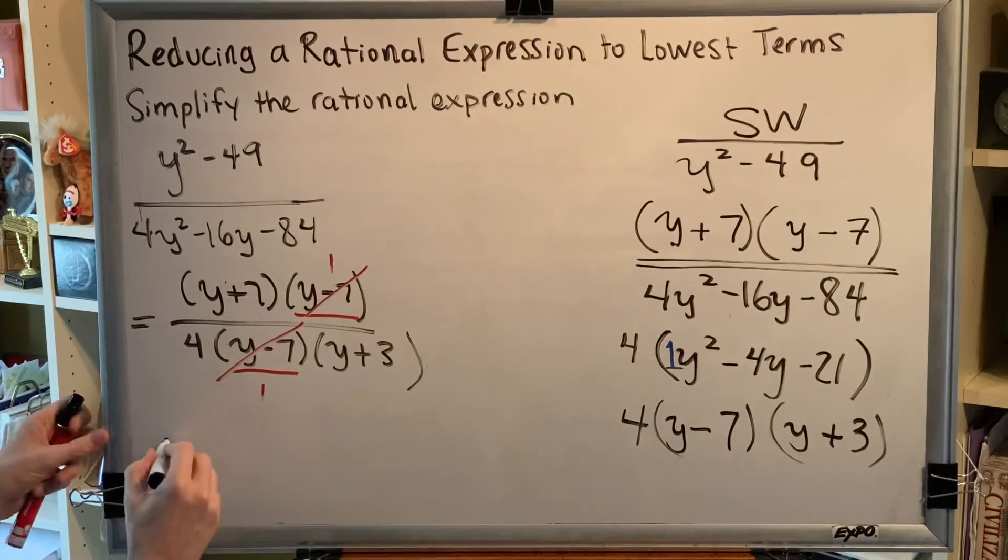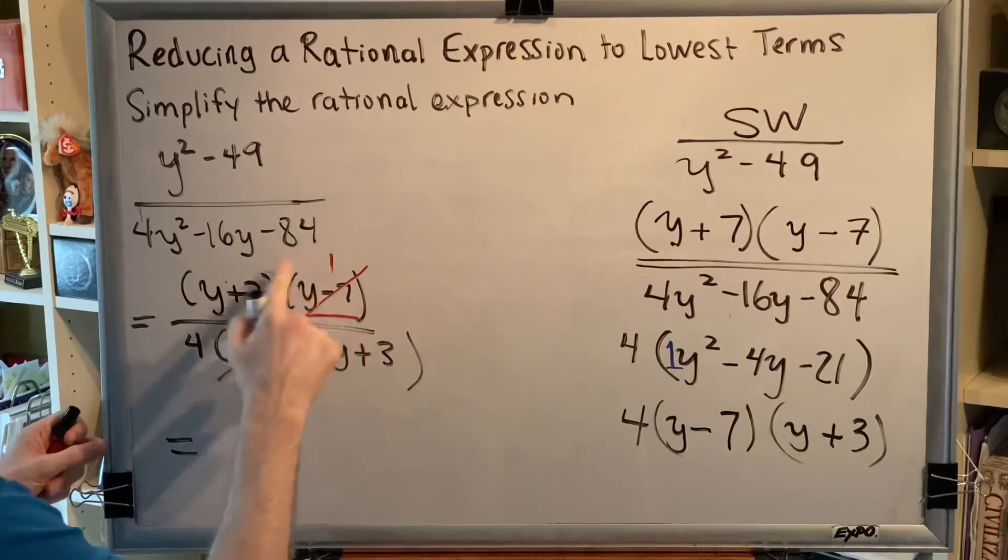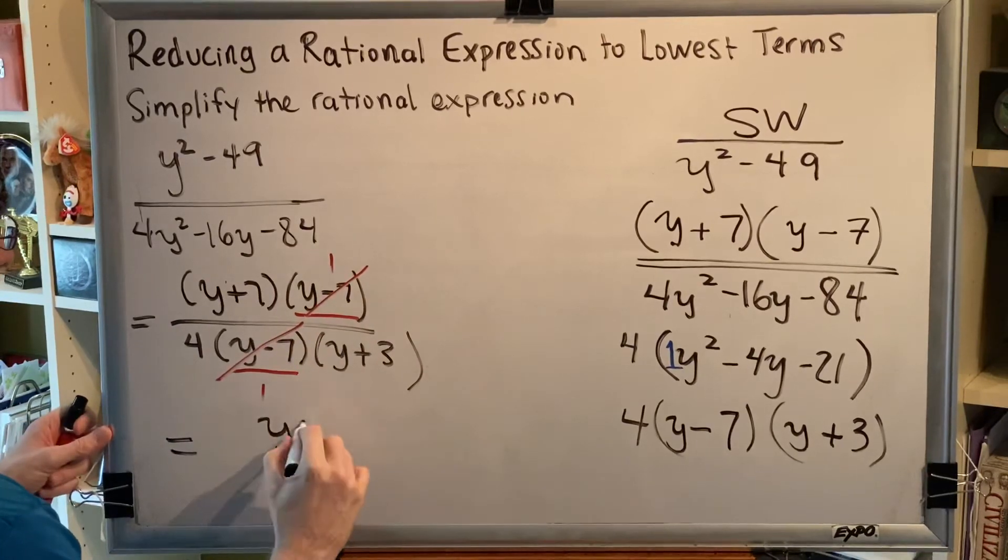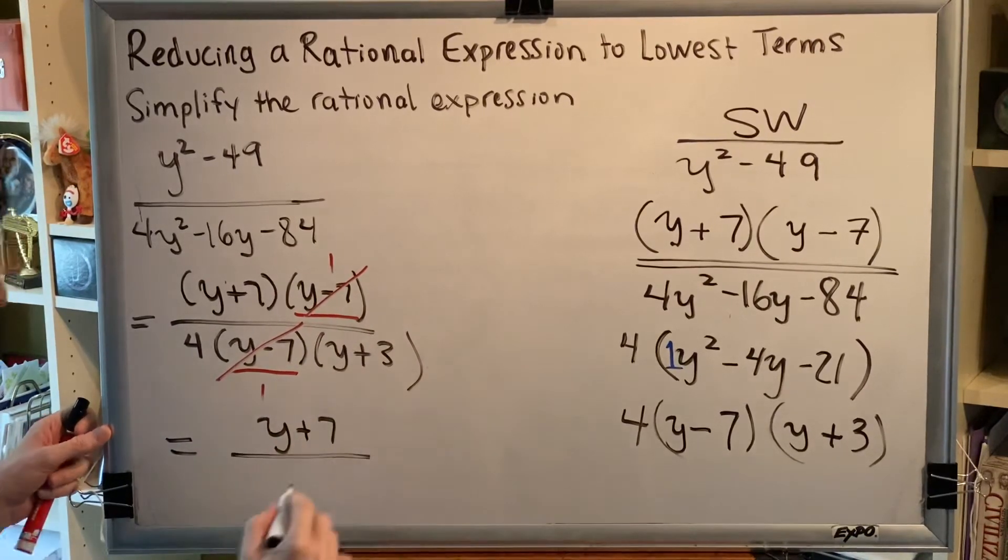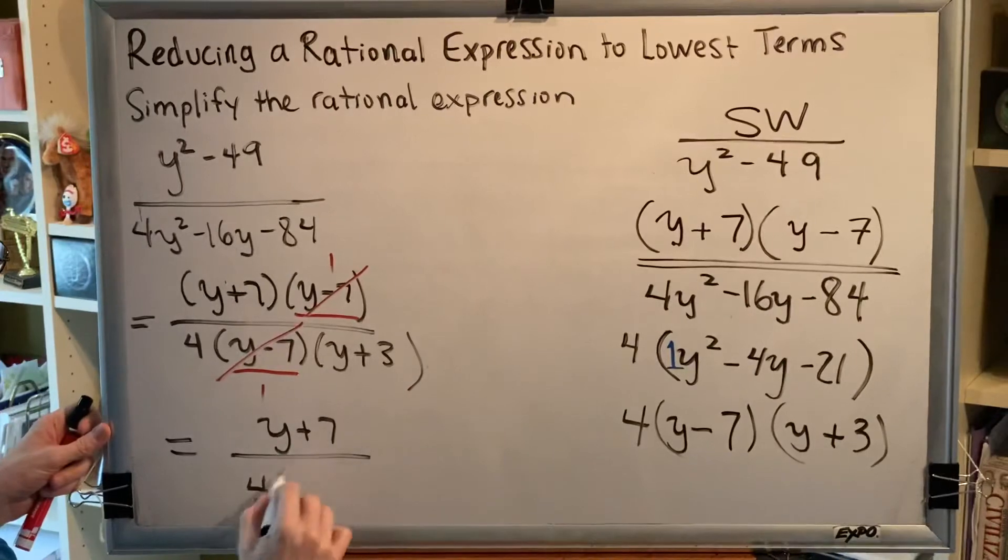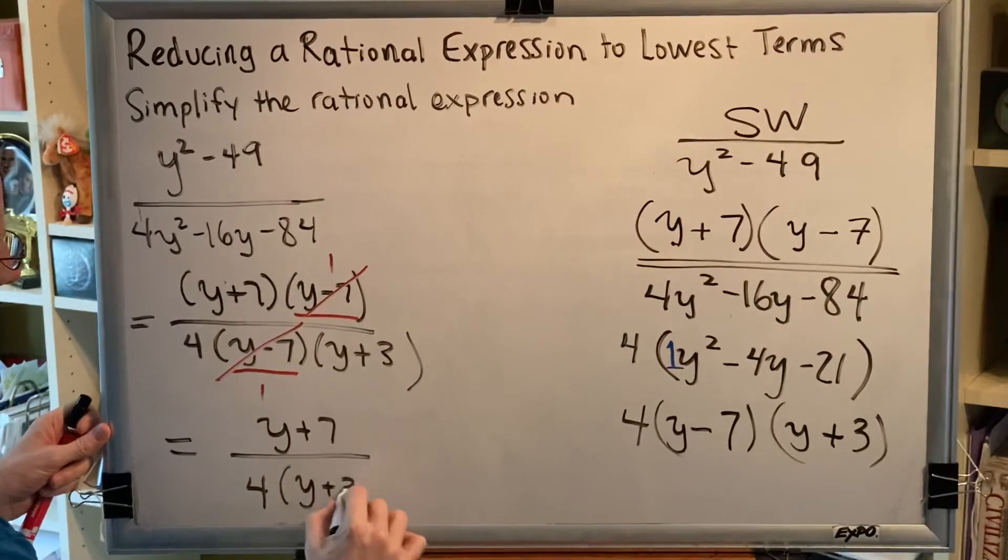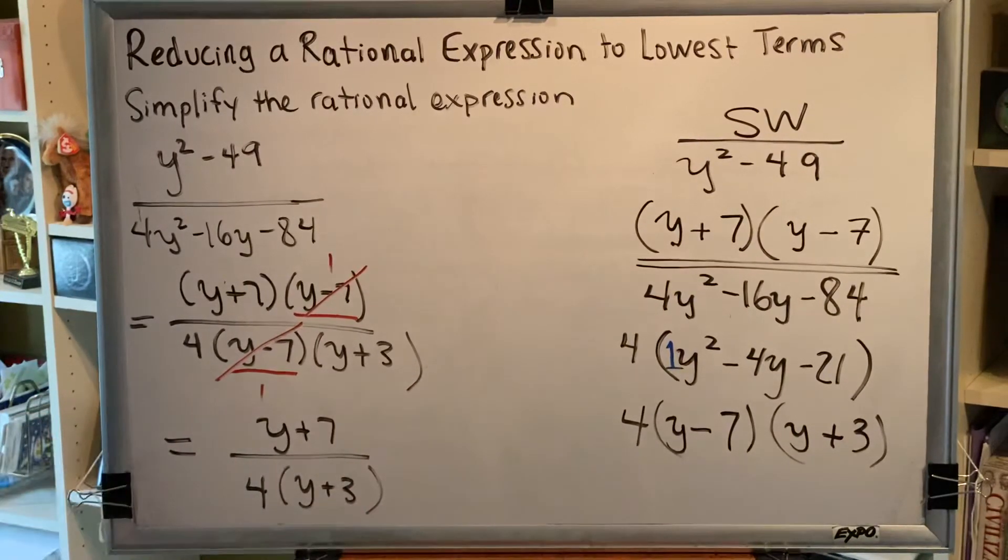And now we can go ahead and write our simplified final answer. Anything times 1 is itself. So the top will be y plus 7. And the bottom will be 4 times the sum y plus 3. Notice that the denominator has parentheses here where the numerator does not.